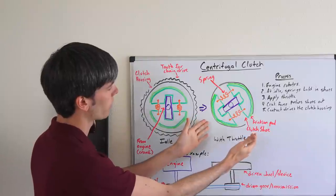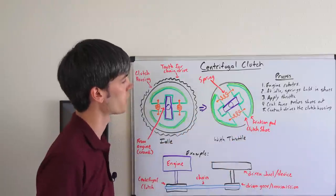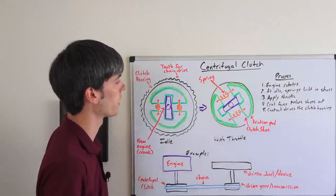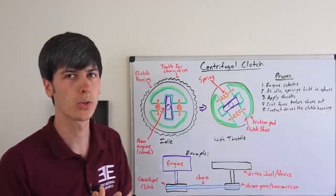So here we have the view while it's at idle. And then here we have it with it at throttle. As you can see, the clutch shoes pressed out and applying that torque to whatever you are driving.